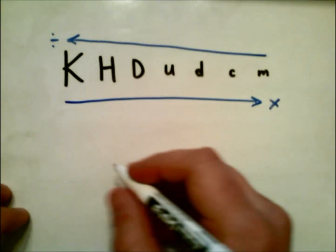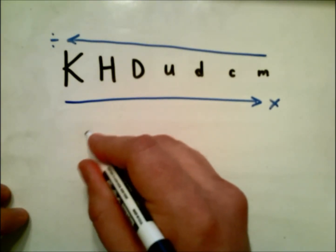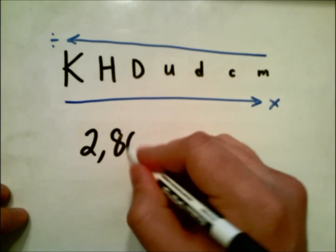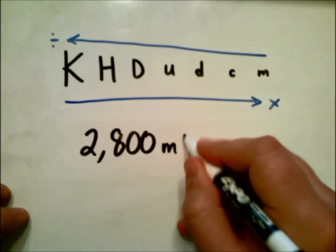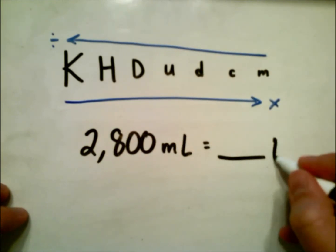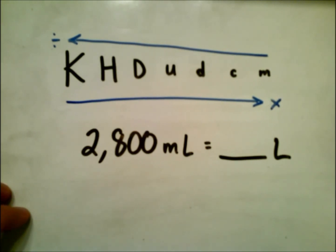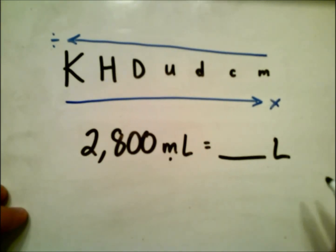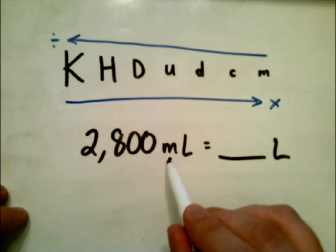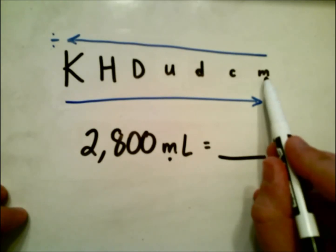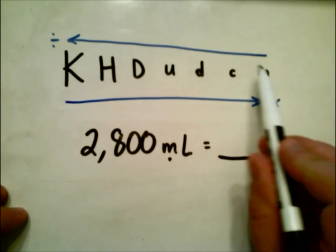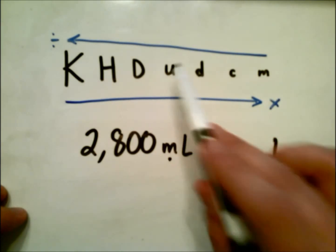So let's try another example. If we have, let's just say, 2800 milliliters, how many liters would that be? Well, I look at my prefix. I know I'm going from milliliters to my base unit. So I'm going from milli to base. Let's count once, twice, three times.